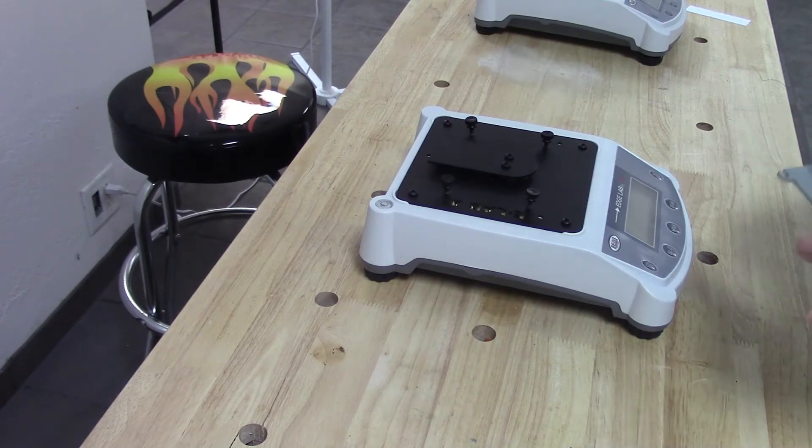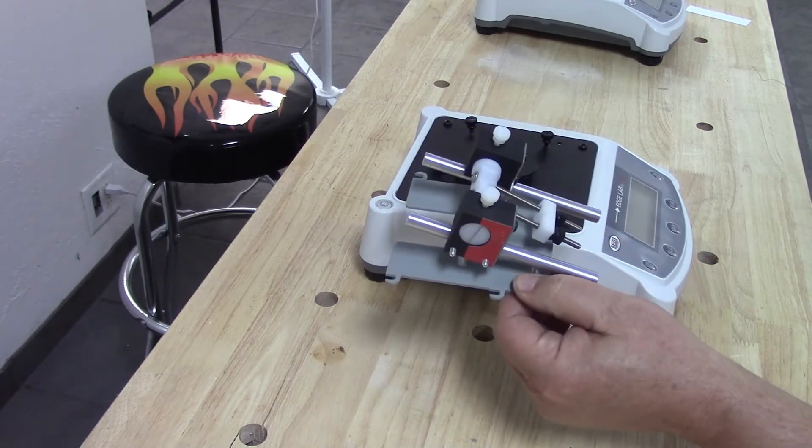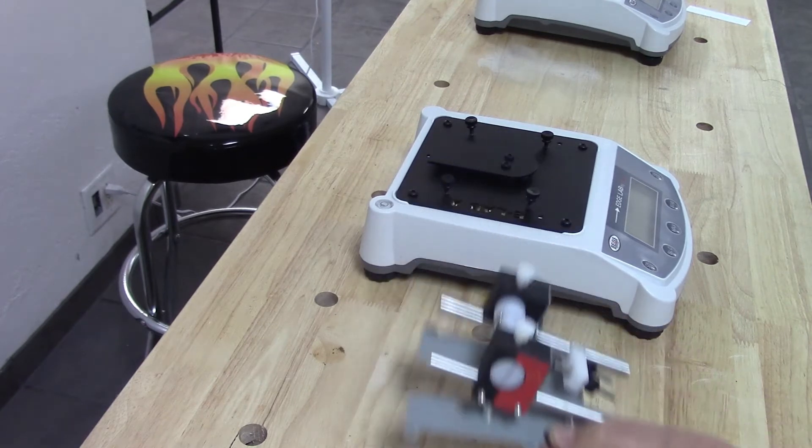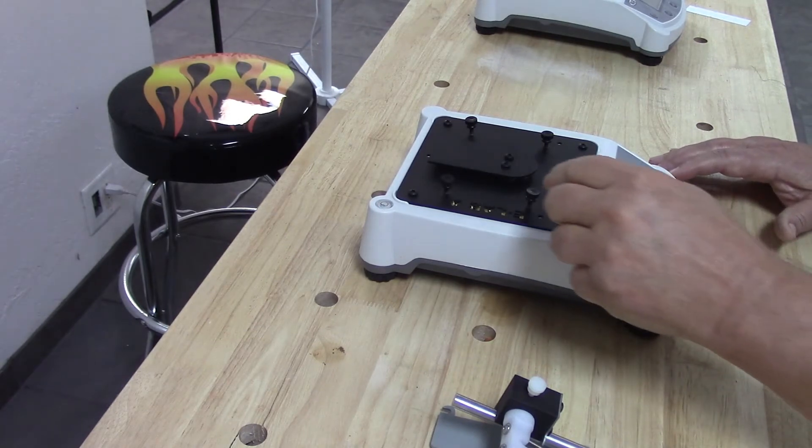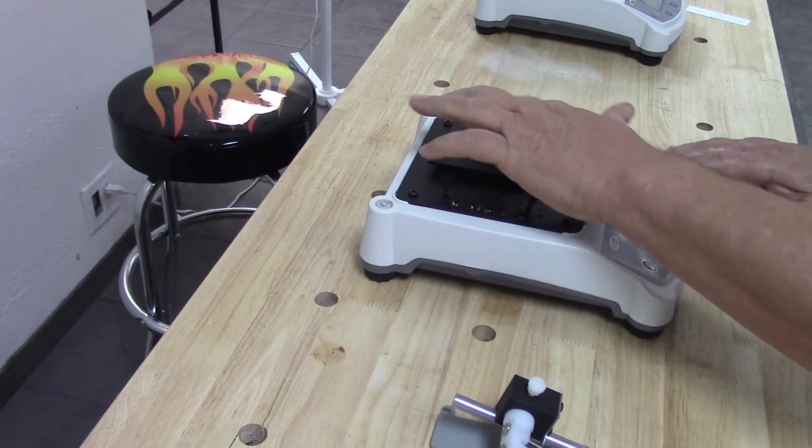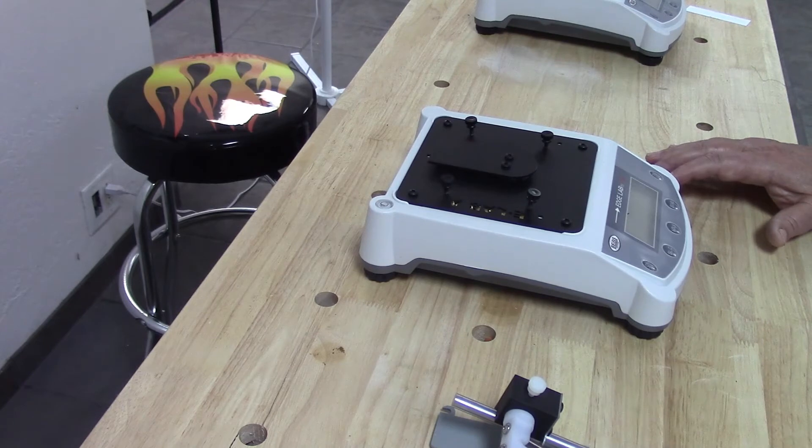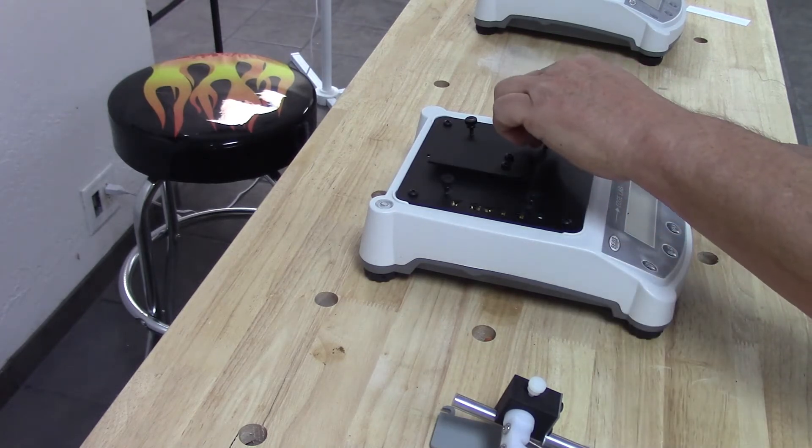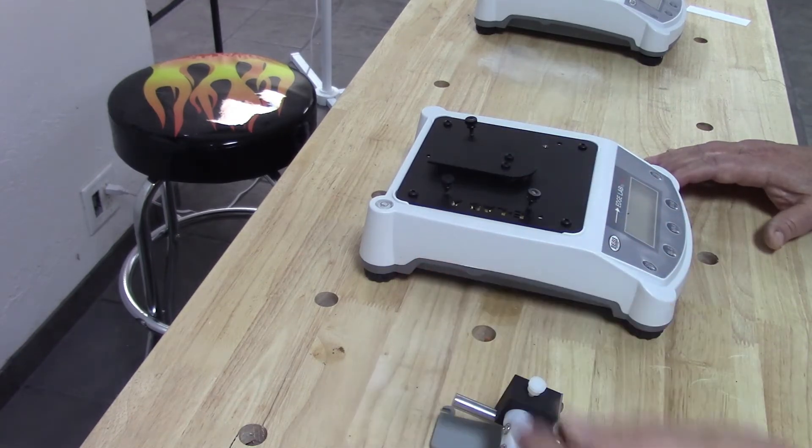When the CNC-10 comes to you, it should look pretty much like this. We're going to install the CNC-10 on this E-Lab-A. As you can see, we've got four screws here in the top plate of the E-Lab-A. To install the CNC-10, all we need to do is remove one of these plastic thumb screws.